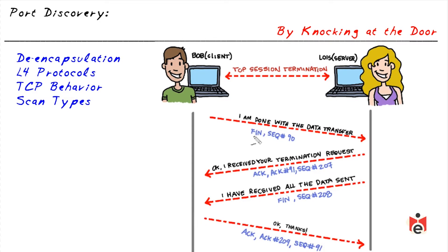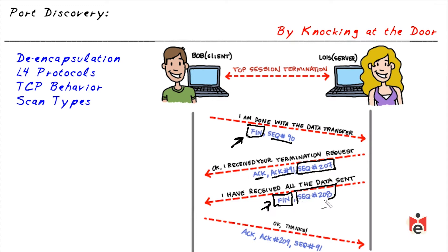The typical TCP termination goes like this: Bob sends a TCP segment with the FIN flag set and a sequence number. Lois sends back an ACK saying the next expected sequence number would be 91, along with her own sequence number of 207. Lois then sends her own FIN with sequence 208. Bob acknowledges with ACK 209, also using his sequence number of 91, completing the termination.